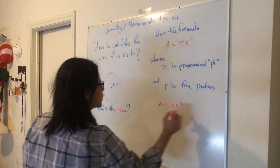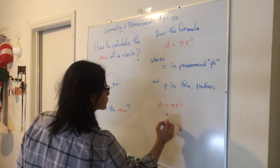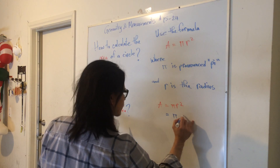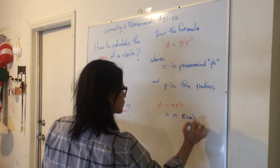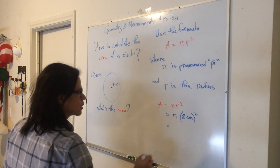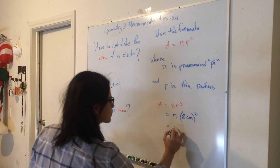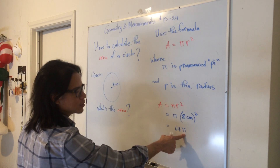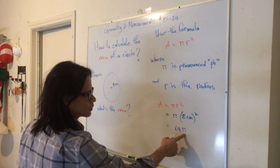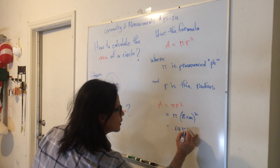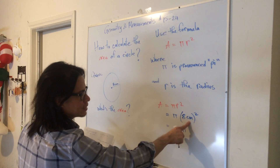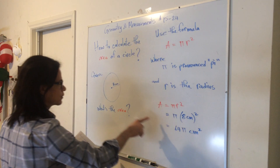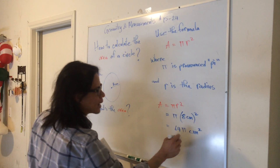Area equals pi r squared. Plugging in what we know, we get pi times the radius of 8 centimeters, squared. 8 squared is 8 times 8, which is 64, and we'll leave pi alone. If you want to be exact, pi is equivalent to 3.14, so 64 times 3.14. The units are centimeters squared — centimeter times centimeter equals centimeter squared. So the area of this circle is 64 pi centimeters squared.